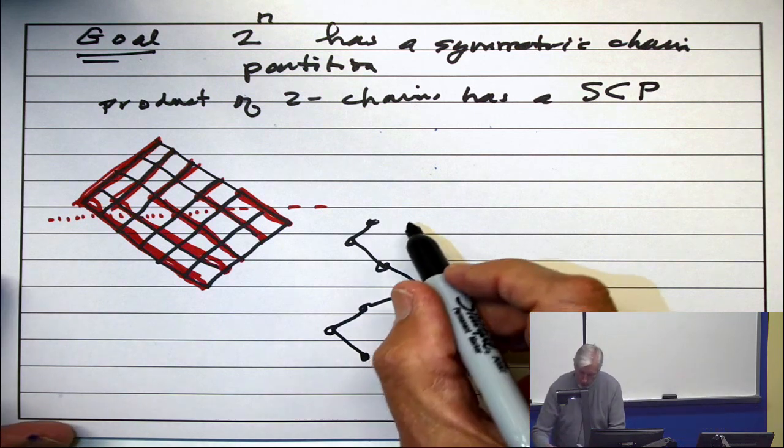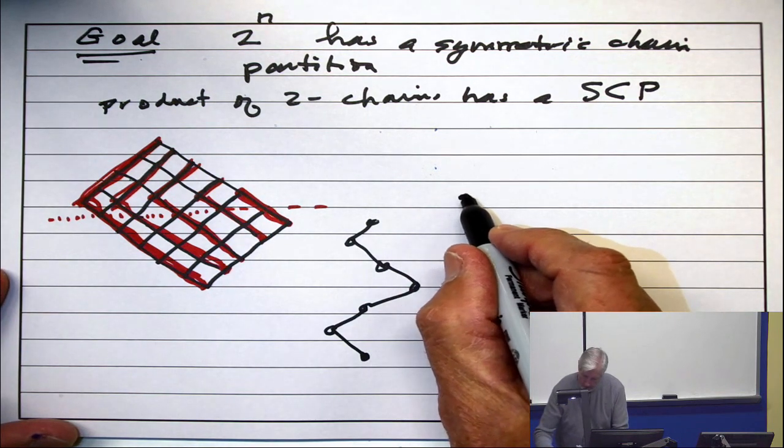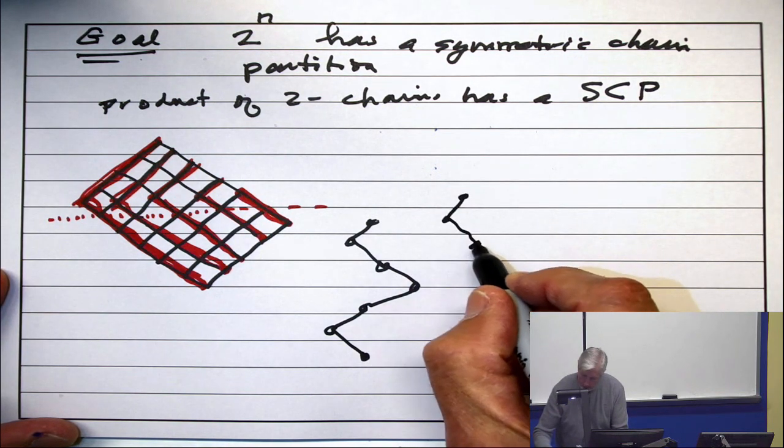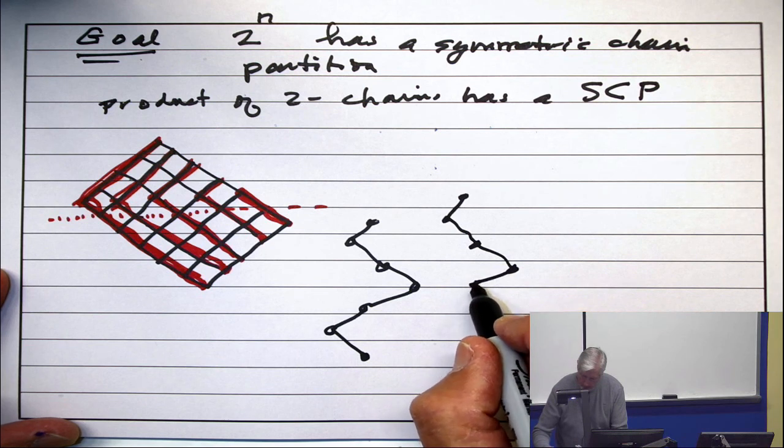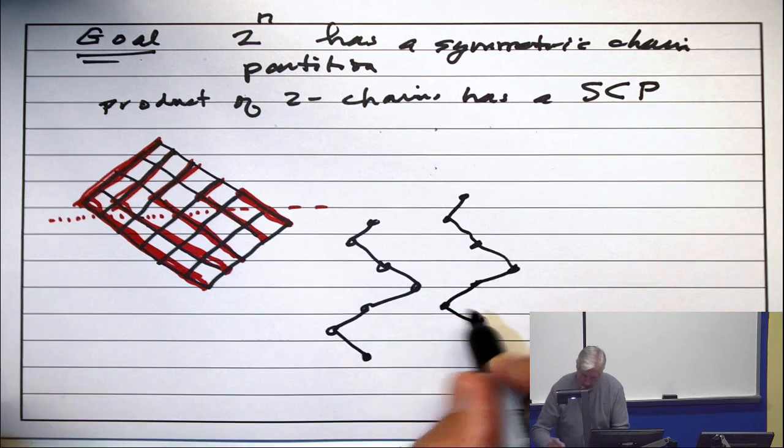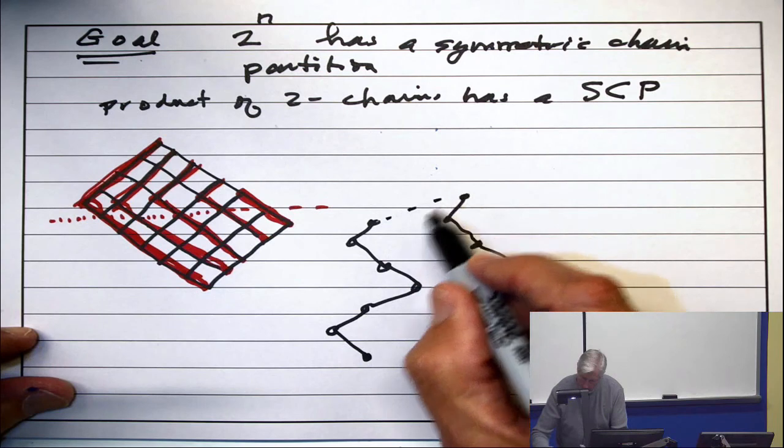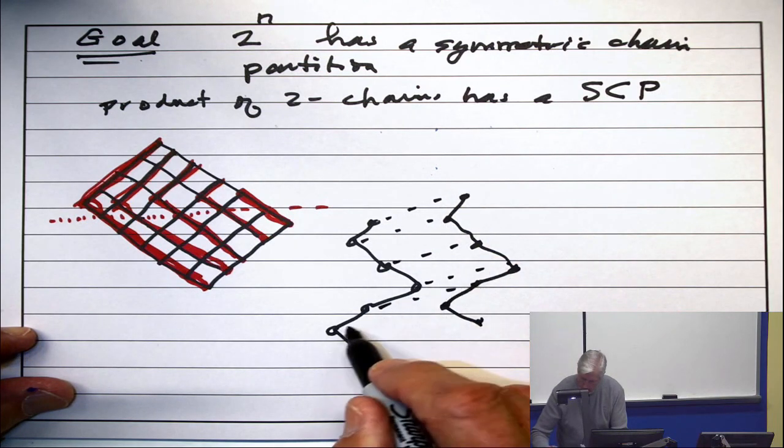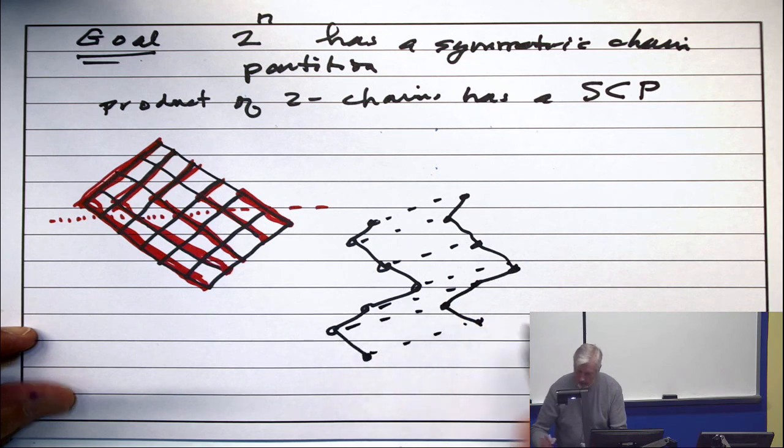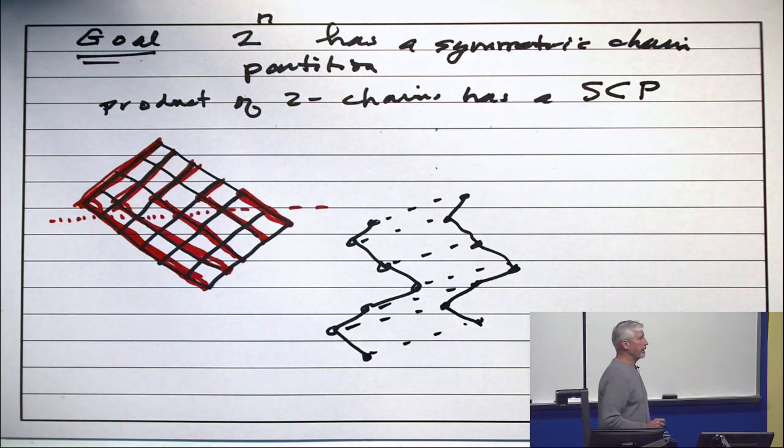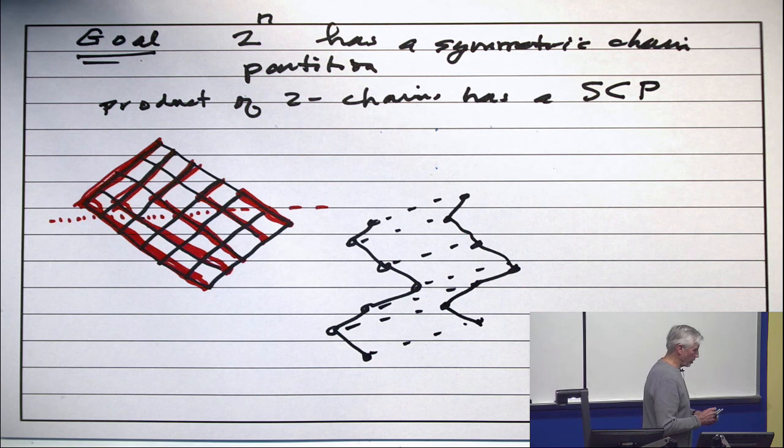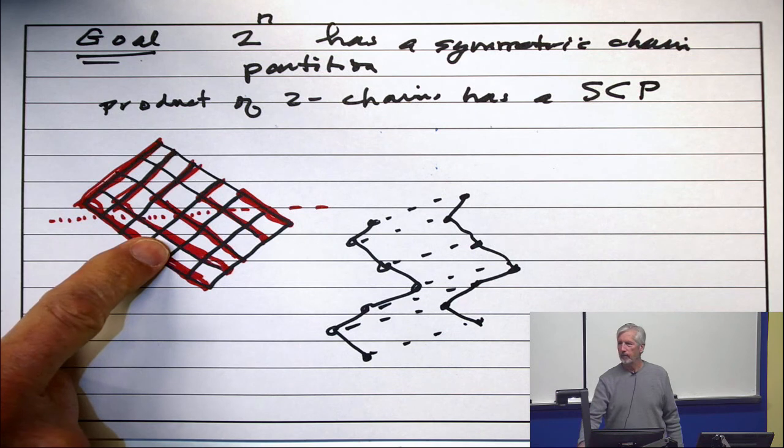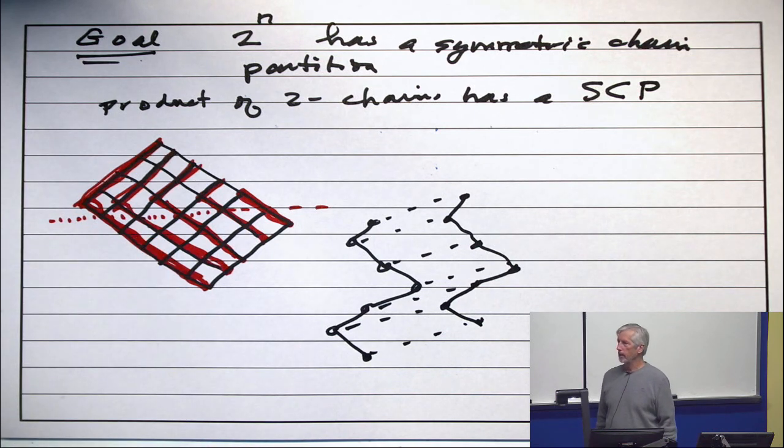Now, let's cross it with a two-element chain. So, let's make another one, which looks just like it. So, there's a matching in here. Does that have a symmetric chain partition? Well, that's a special case of this. Just drawn funny. That's a product of two chains.